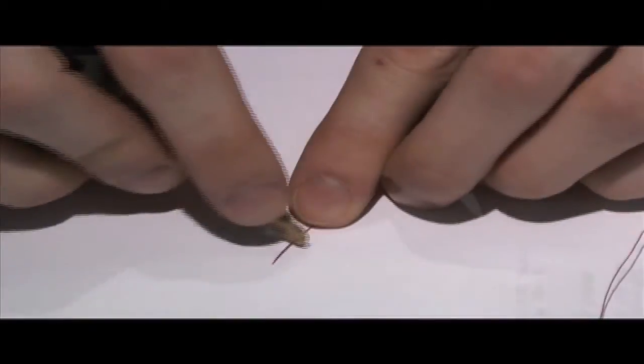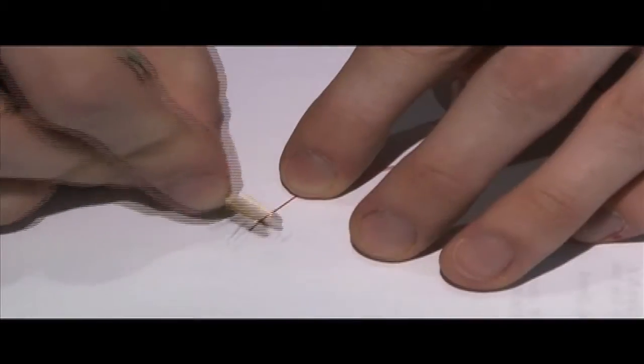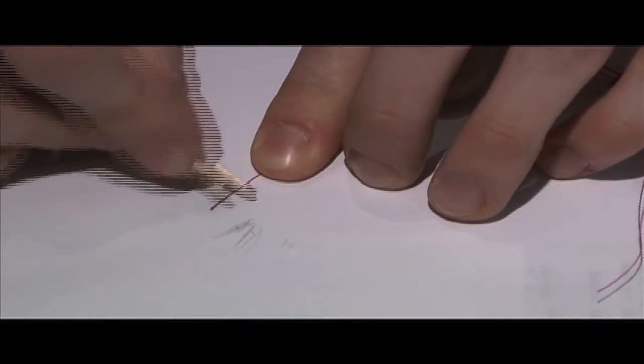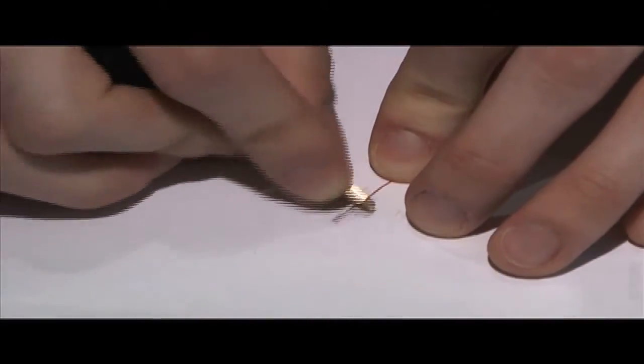Use a key to scrape enamel off both leads, about 2-4 inches worth. If you have it, sandpaper also works really well for this. Make sure you're scraping gently and rotating the wire as you go to make sure you get all sides.